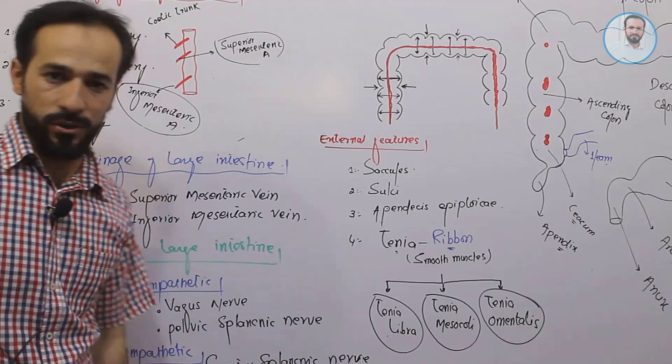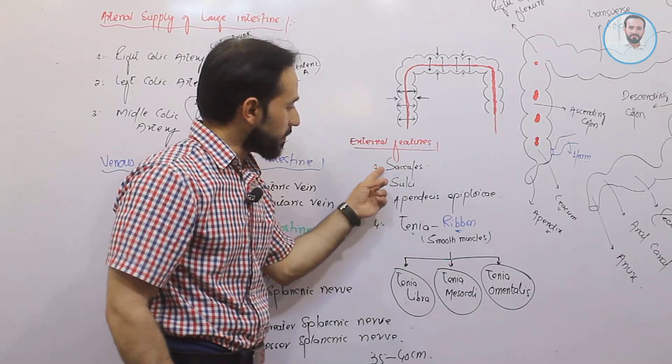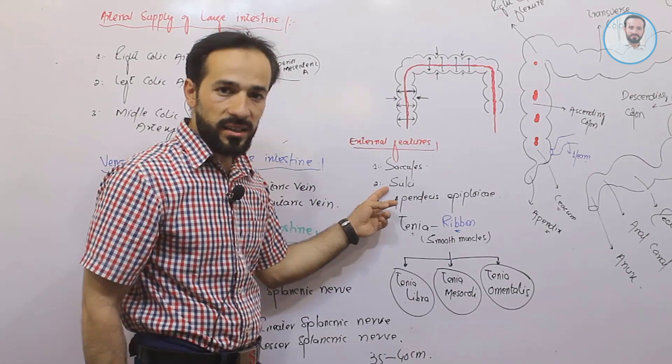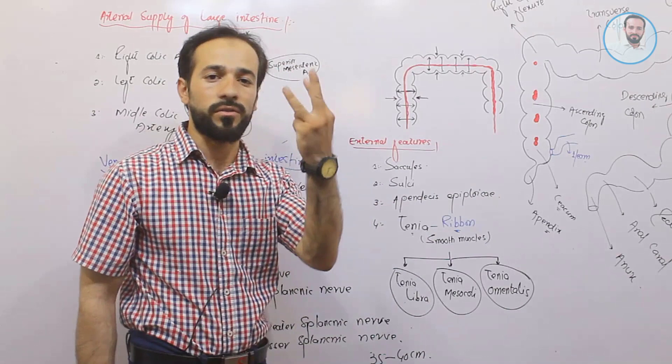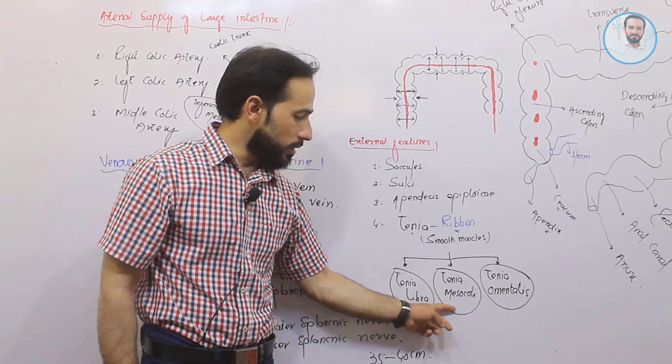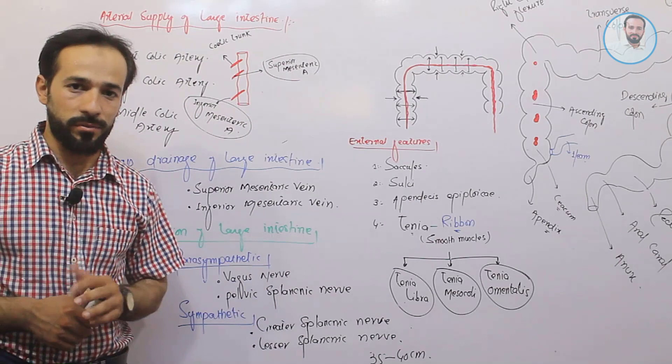To summarize the external features: the expanded sac-like parts are called saccules; the small depressions between them are called sulci; the fat lobules attached to the large intestine are called appendices epiploicae; and the ribbon-like smooth muscle structures on three sides are called teniae — tenia libera, tenia mesocoli, and tenia omentalis. This concludes the brief overview of the large intestine.